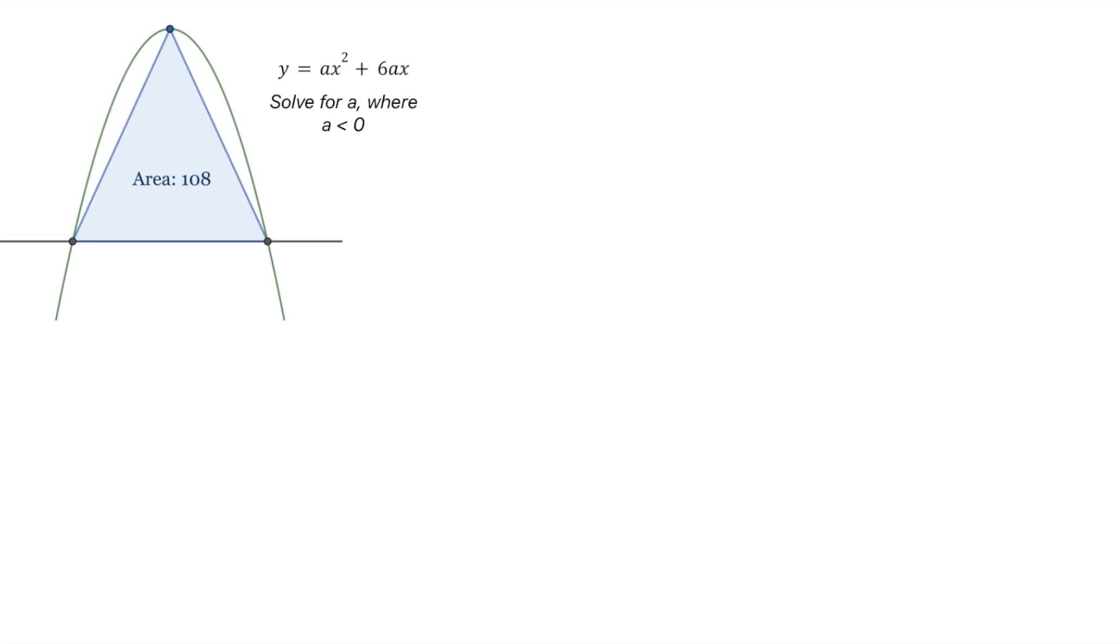Hello everyone and welcome to Pentagon. Here's today's problem. We have the graph of a parabola and we're given that the triangle formed by connecting its roots and the vertex has an area of 108. The equation of the parabola is y equals ax squared plus 6ax and we need to solve for a where a is less than 0.